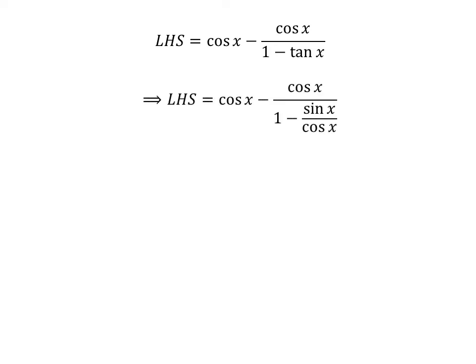We know tangent of x is equal to sine of x upon cosine of x. So replacing tangent of x in the denominator gives us the left hand side equal to cosine of x minus cosine of x upon 1 minus sine of x upon cosine of x.